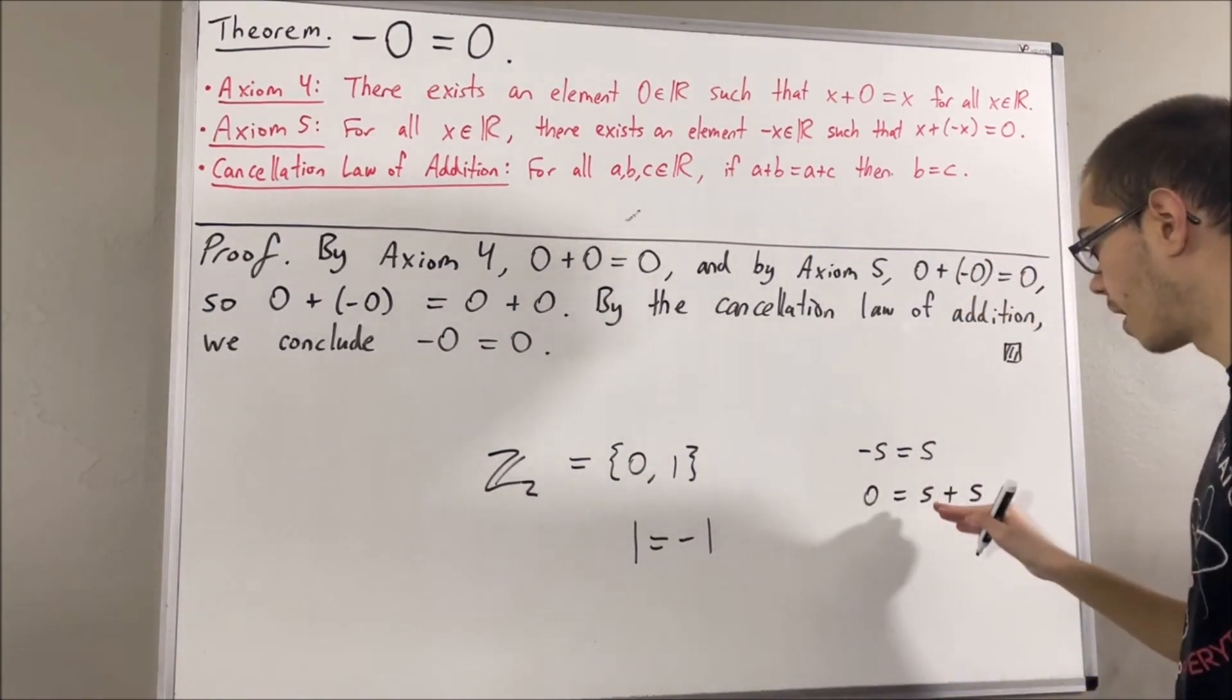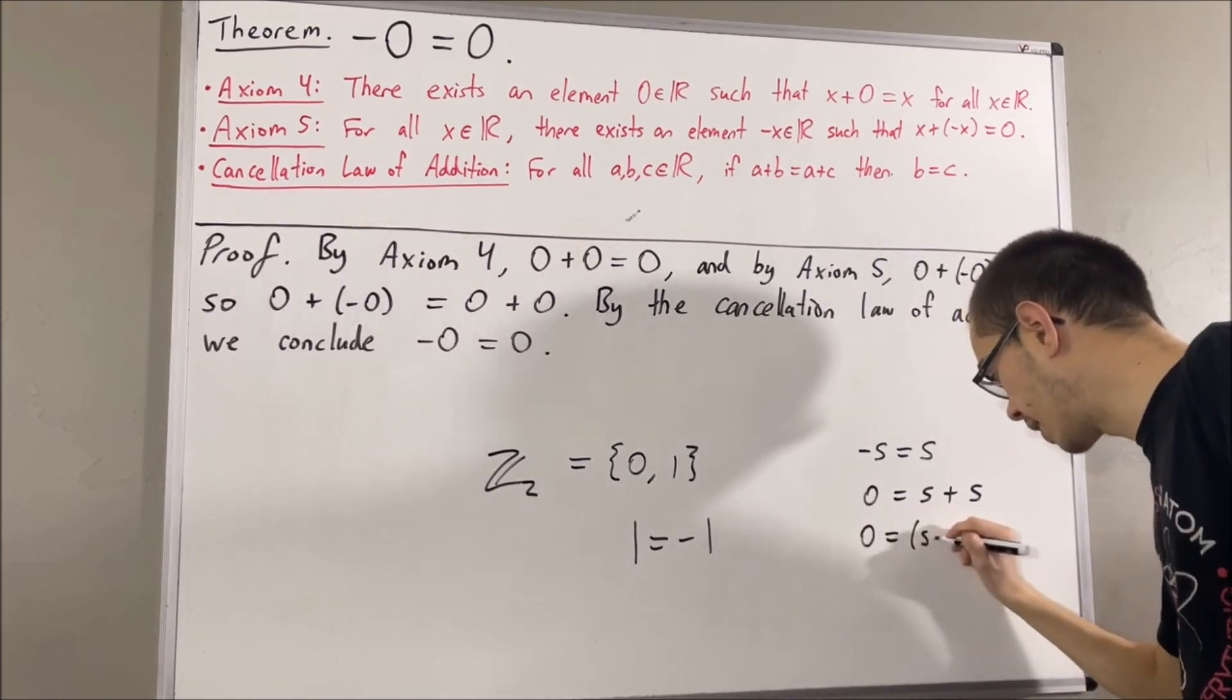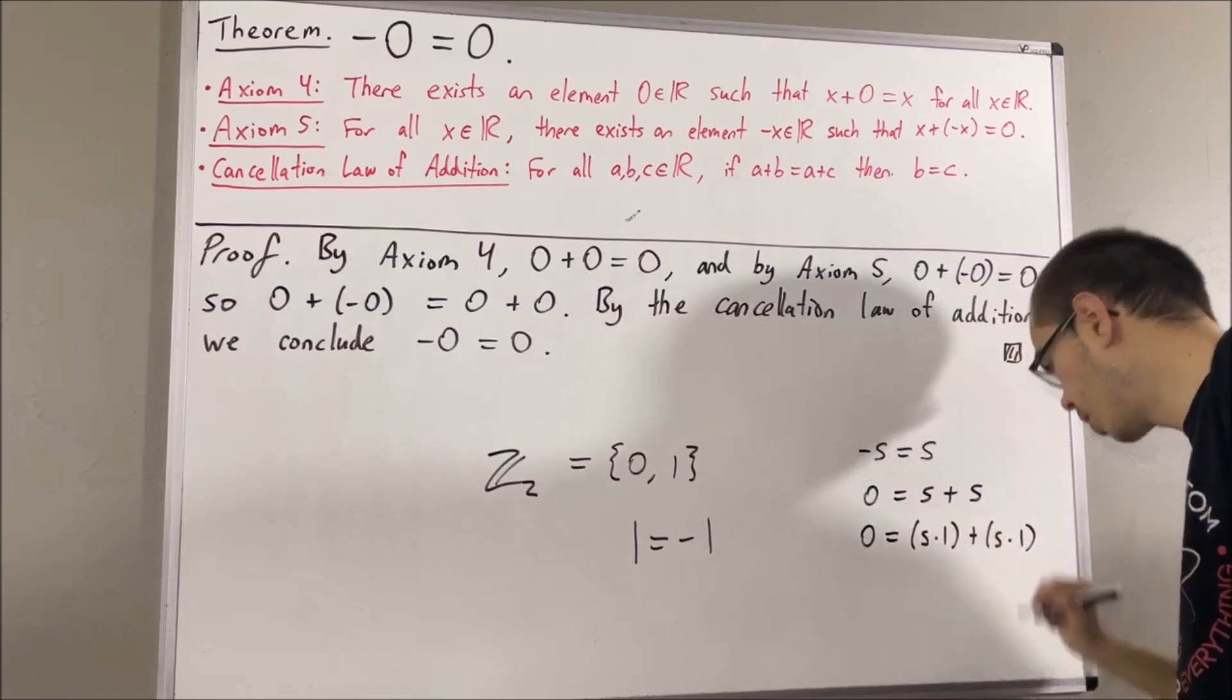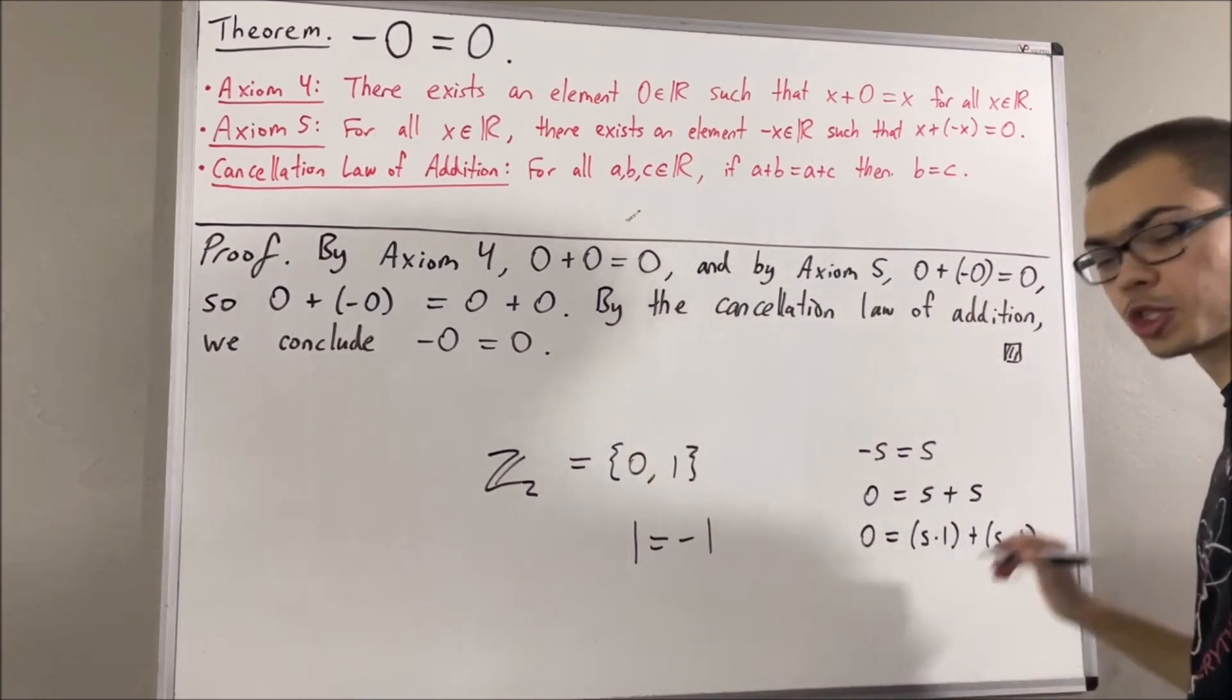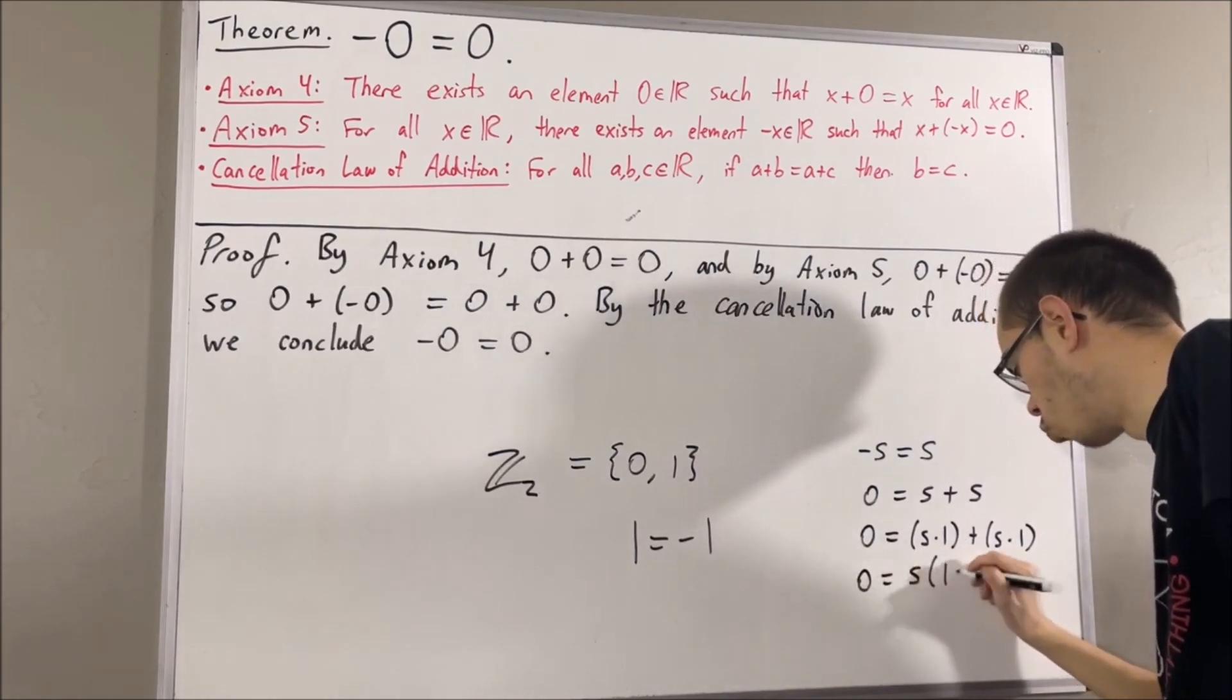But from here, S is equal to S times 1. So, we have zero equal to S times 1 plus S times 1. But then, by the distributive law, this is really just S times 1 plus 1.